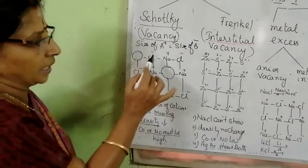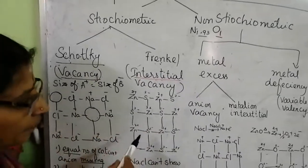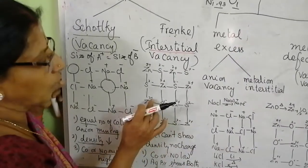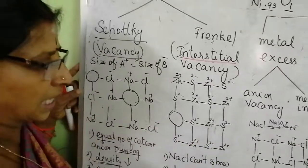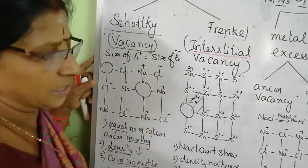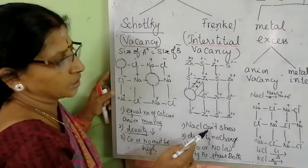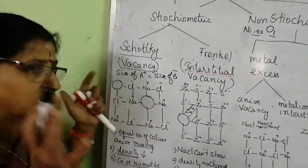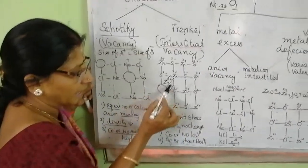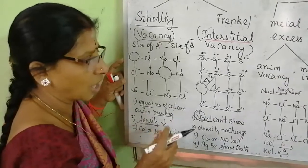Now let us come to the Frenkel defect. Here, it is not like NaCl. Here, only the small size cation — cation is very small, like zinc sulfide — it is missing from its lattice point and it occupies an unoccupied interstitial space. So it is called interstitial defect as well as lattice defect. NaCl cannot show this defect because alkali metals like Na⁺ are large in size and cannot occupy the interstitial void.